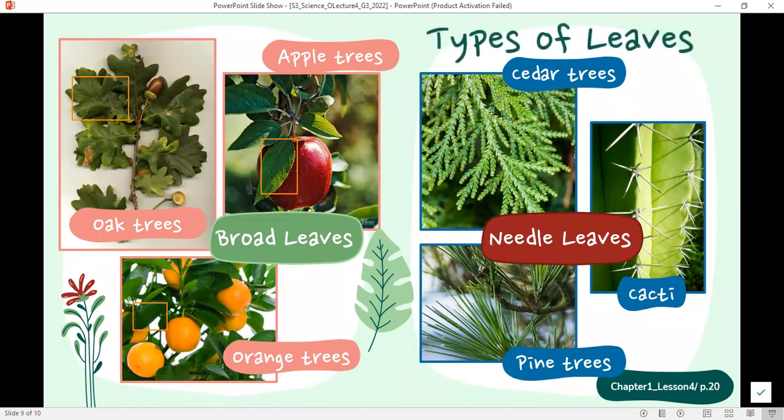What are types of leaves that we just saw? Broad leaves, like for example, the leaves of the oak tree, the apple tree, the lemon tree, the orange tree, and others. And needle leaves, like the leaves of cedar, pines, cacti, and also other examples of plants.